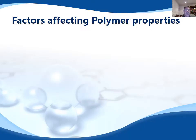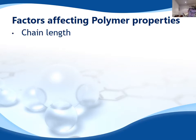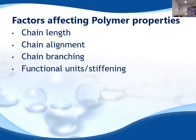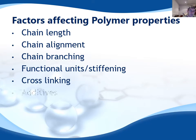There are a number of different factors that are important when looking at polymer properties. These include the length of the chain, the alignment of the chain, the number of branches, the functional units or the stiffening that can occur, cross-linkage, and also additives.